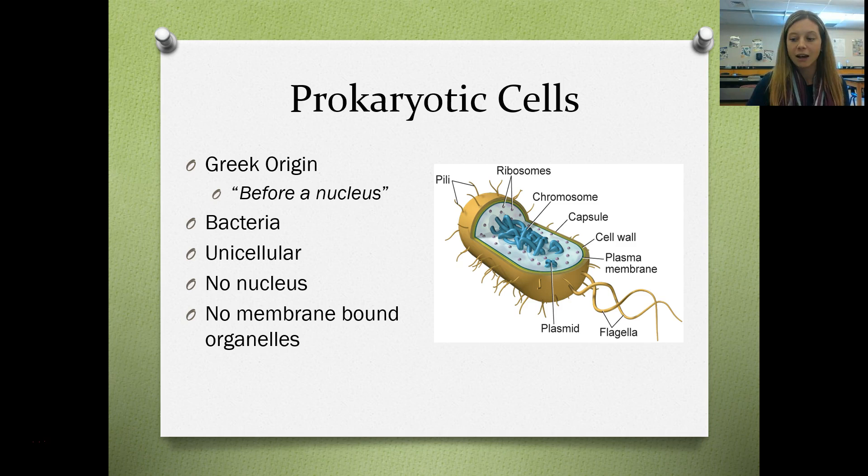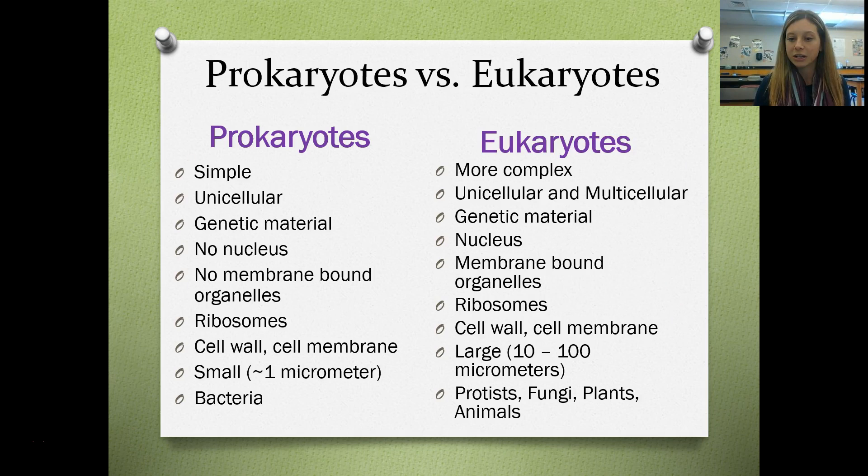Let's compare prokaryotic and eukaryotic organisms. Fill in your Venn diagram on your notes organizer. Prokaryotic cells are much simpler — they are all unicellular. Their cells contain genetic material just like eukaryotic cells, but they don't have a nucleus and they don't have those membrane-bound organelles.